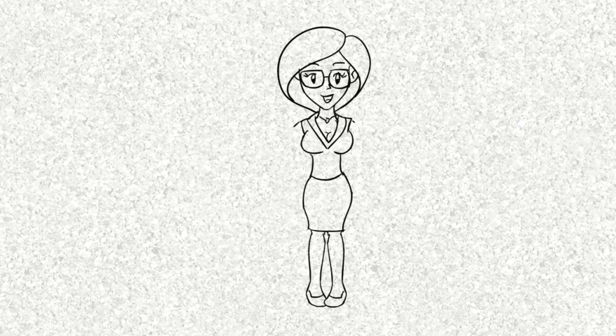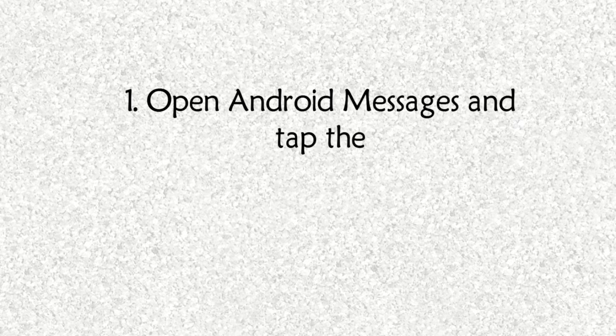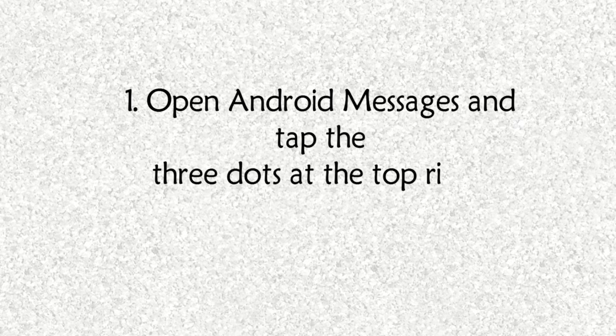How to disable Android Messages for Web. Google makes it easy to shut this off. Step 1: open Android Messages and tap the three dots at the top right. Step 2: tap Messages for Web. Step 3: tap the three dots again. Step 4: tap Notifications. Step 5: tap Show Persistent Notification to disable it.